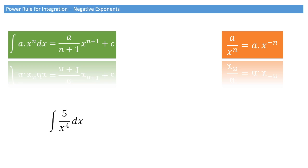That means that anything looking like 3 over x to the power of 4 can be written as 3 times x to the power of negative 4. Or, if we had 2 over x to the power of 5, that could be written as 2 times x to the power of negative 5. Using that, we can now use the power rule for integration for any integral looking like this one.